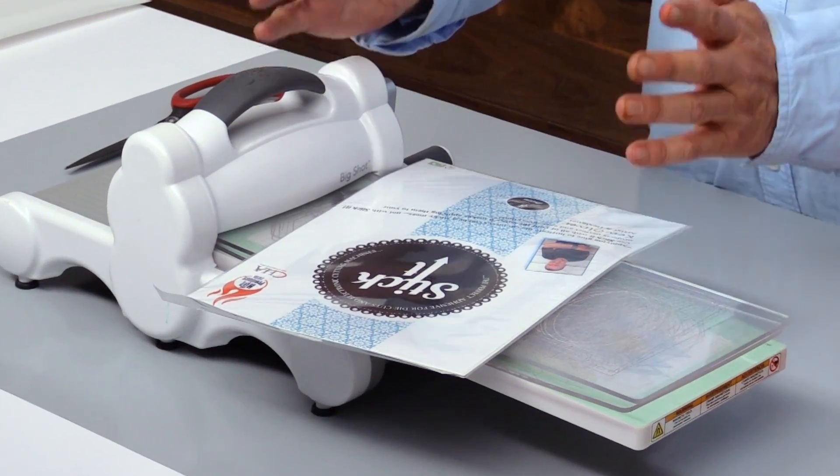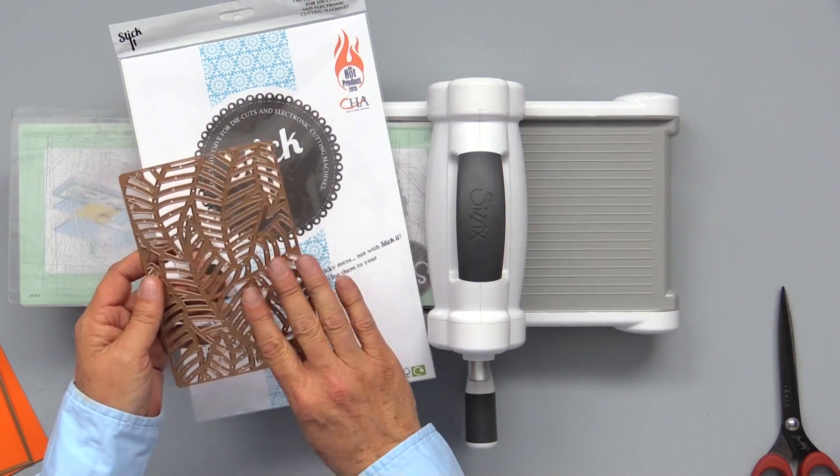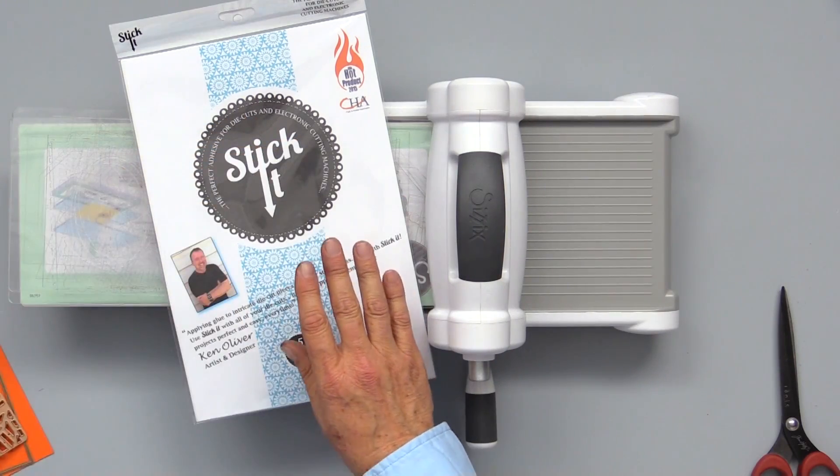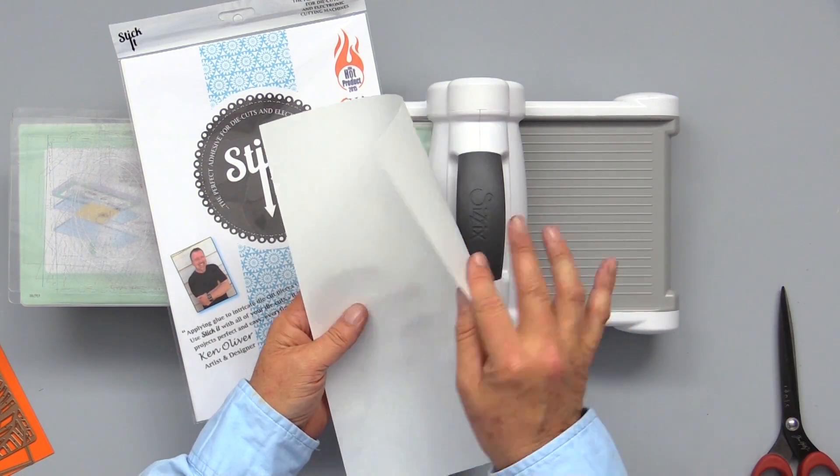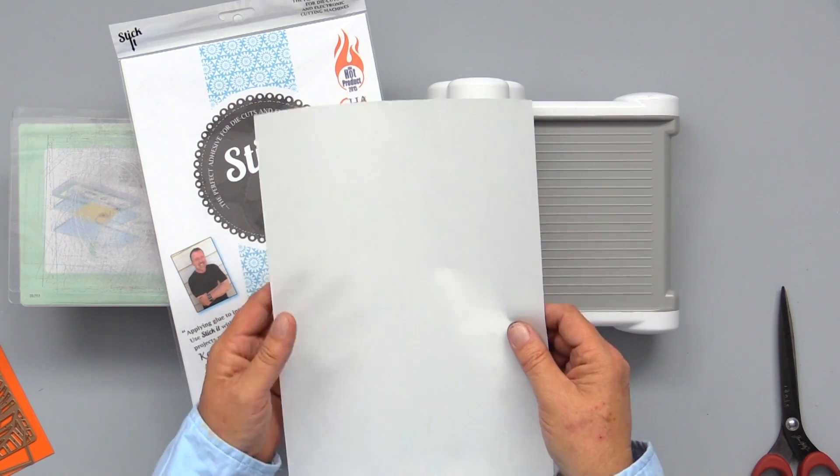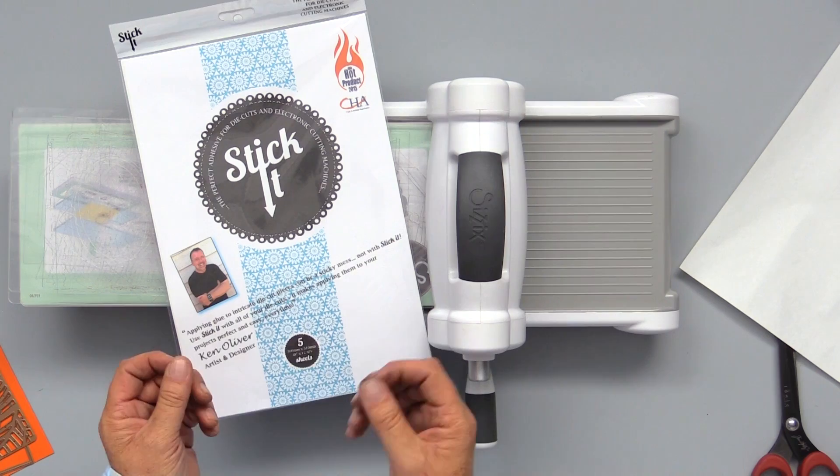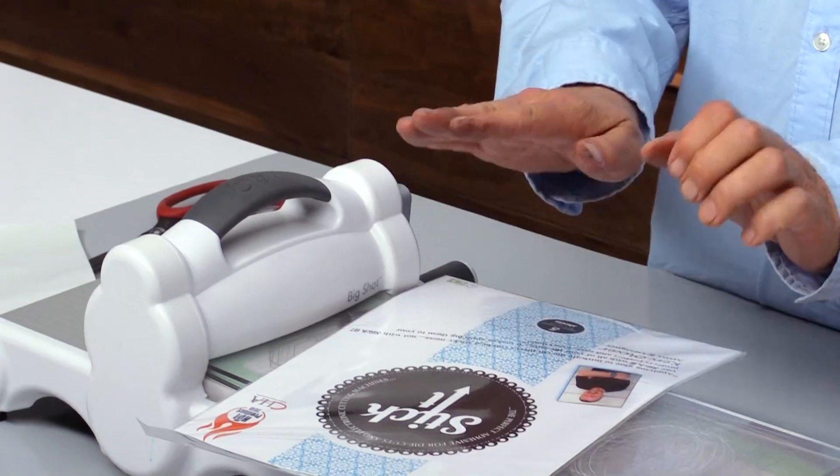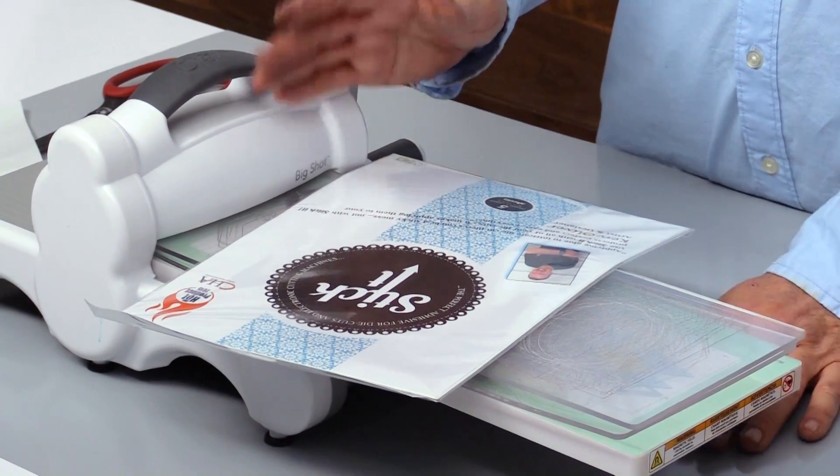Stick It is an amazing adhesive product that makes gluing down those intricate die cuts really easy. It works because it's adhesive that is actually between two release liners. You apply this to the back of your cardstock, then die cut as normal, and then just simply stick your die cut in place very quick, very easy. It's a great product.